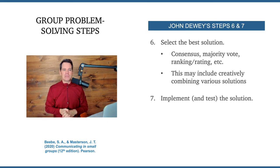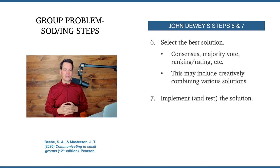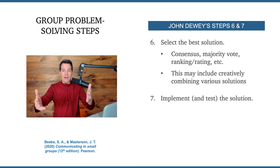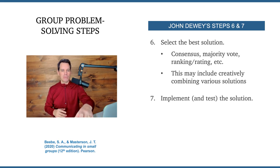John Dewey adds step six and seven: select the best solution through some method like consensus, majority vote, or ranking and rating. Step seven is where you implement and test the solution — roll it out, see how it goes, and then potentially refine and improve it.